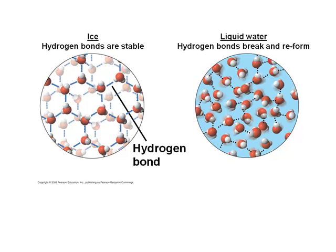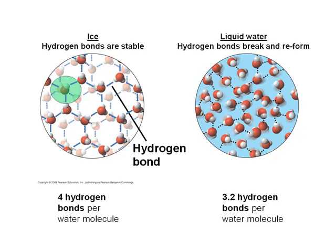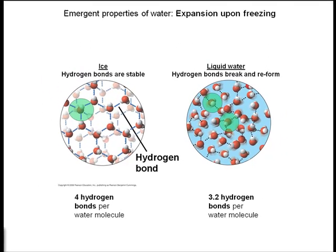The stable bonds between water molecules at these lower temperatures lock the molecules into a crystalline lattice formation. And each molecule is bonded to four other molecules, whereas in liquid water on average you get 3.2 bonds between one molecule and others. Some are bonded to two, some are bonded to three, some to four, but on average it's 3.2. This difference is why ice is actually 10% less dense than liquid water.